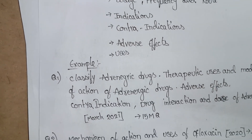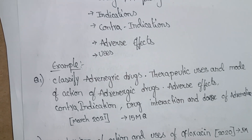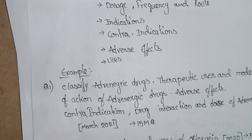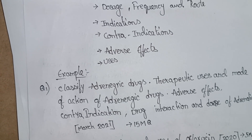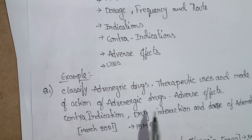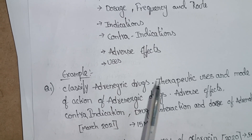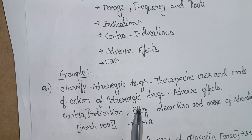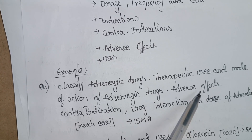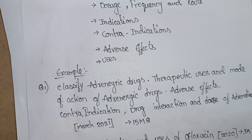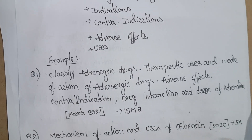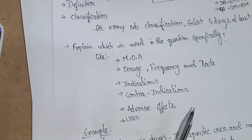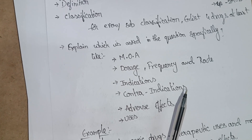Now I will explain this pattern with an example. This is a question asked in 2021, originally for 15 marks, but since we now don't have 15-mark questions, we will write for 10 marks: 'Classify adrenergic drugs, therapeutic use and mode of action of adrenergic drugs, adverse effects, contraindications, drug interactions, and doses of adrenaline.' I will now discuss how to write this question for 10 marks.